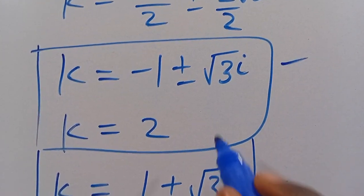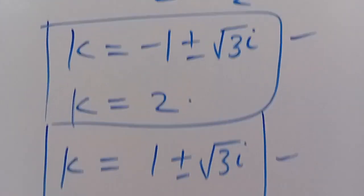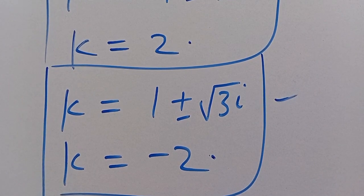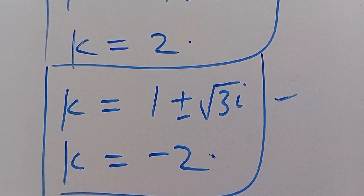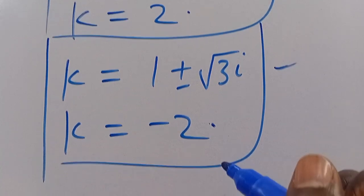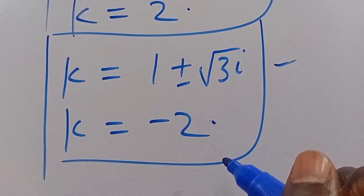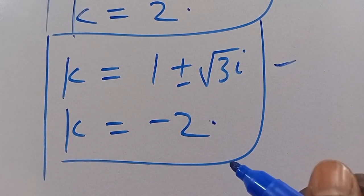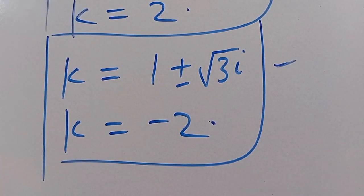So the complex solutions are k equals 1 plus or minus root of 3i and k equals minus 1 plus or minus root of 3i, while the real solutions are k equals 2 and k equals minus 2. If you are new here and you find this video interesting, don't forget to share, like, comment and subscribe to our YouTube channel for more math tutorial videos. Bye bye.